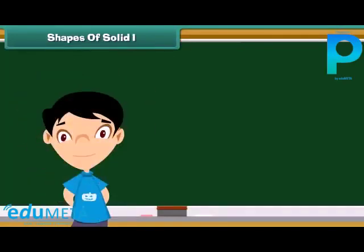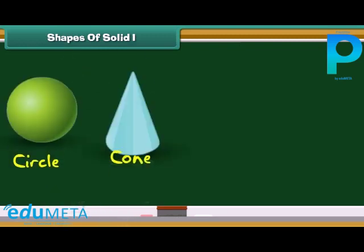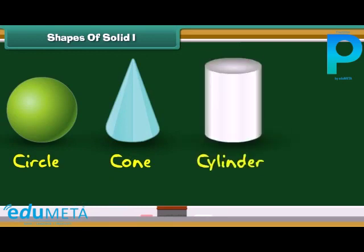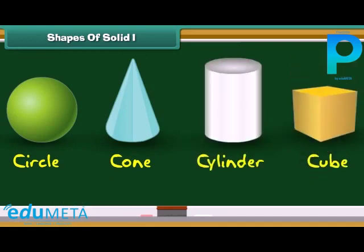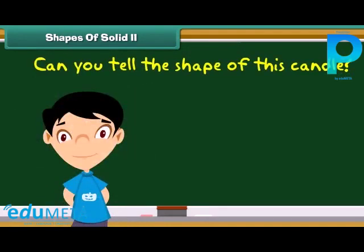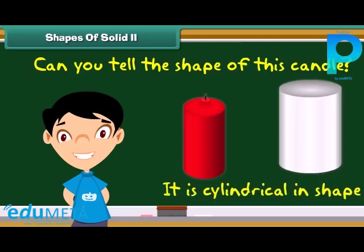Solids are of different shapes. We will now learn the names of the solids of different shapes. The shapes and their names are displayed on screen: circle, cone, cylinder and cube. Can you tell the shape of this candle? Yes, you are right. It is cylindrical in shape.